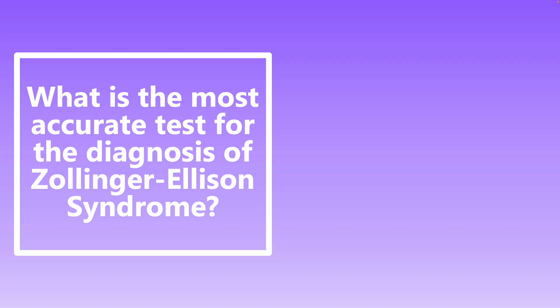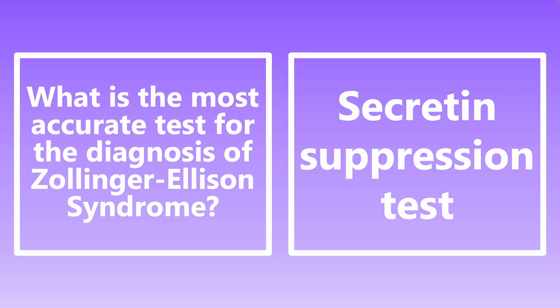What is the most accurate test for the diagnosis of Zollinger-Ellison syndrome? Remember, you really want to make sure you're reading questions slowly and understanding what they're asking — most accurate, most sensitive, gold standard, etc. The most accurate test for diagnosis of Zollinger-Ellison syndrome, also known as a gastrinoma, is a secretin suppression test. It leads to elevated gastrin and gastric acid output.